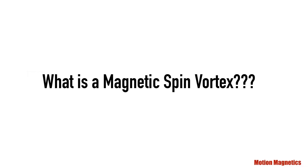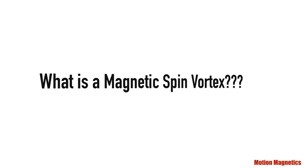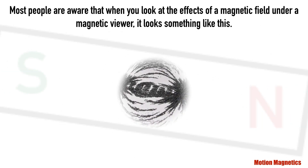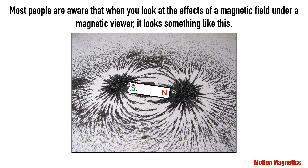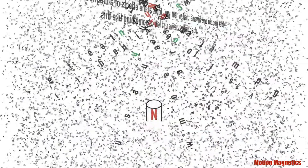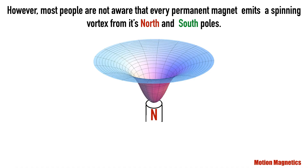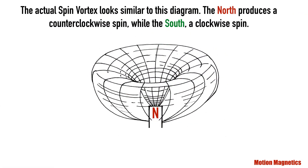What is a magnetic spin vortex? Most people are aware that when you look at the effects of a magnetic field under a magnetic viewer, it looks something like this. However, most people are not aware that every permanent magnet emits a spinning vortex from its north and south poles. The actual spin vortex looks similar to this diagram. The north produces a counterclockwise spin while the south produces a clockwise spin.